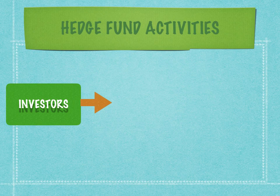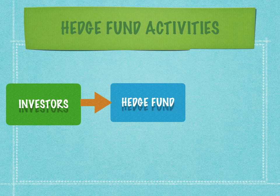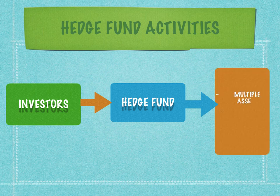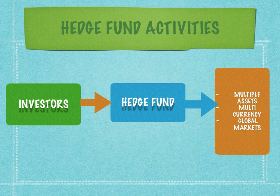Hedge fund activities revolve around investors pooling their money and investing in the hedge fund. These investors are typically ultra-high-net-worth individuals, sports celebrities, film stars, unicorn founders, etc. They invest in the hedge fund, which pools this money, creates a large corpus, and then invests in different assets in multiple currencies across different markets. The nature of these activities is fairly risky, because they play along both the macroeconomic and microeconomic aspects of asset performance.